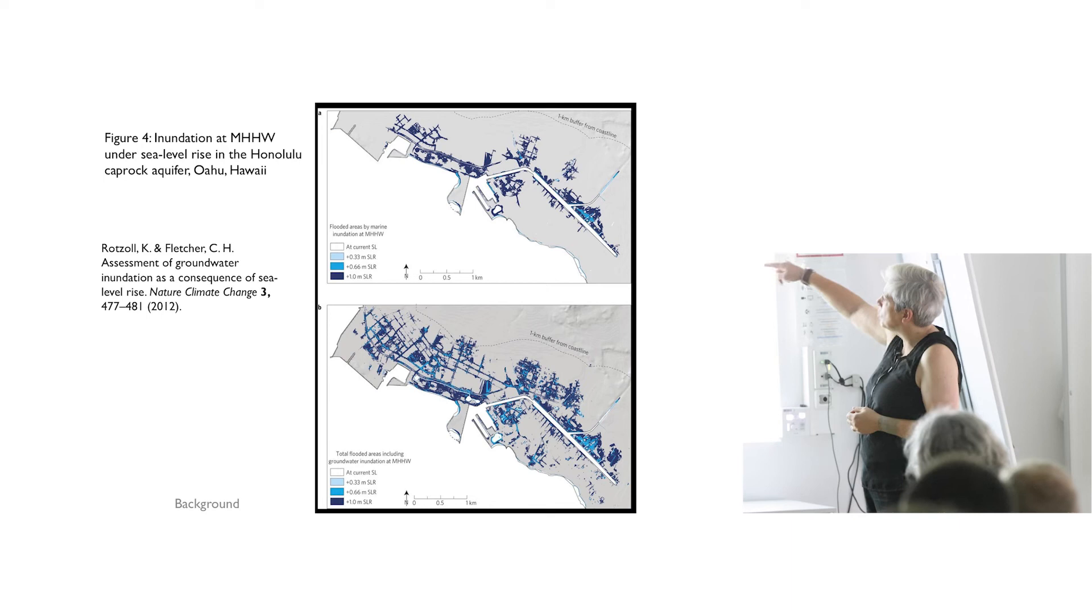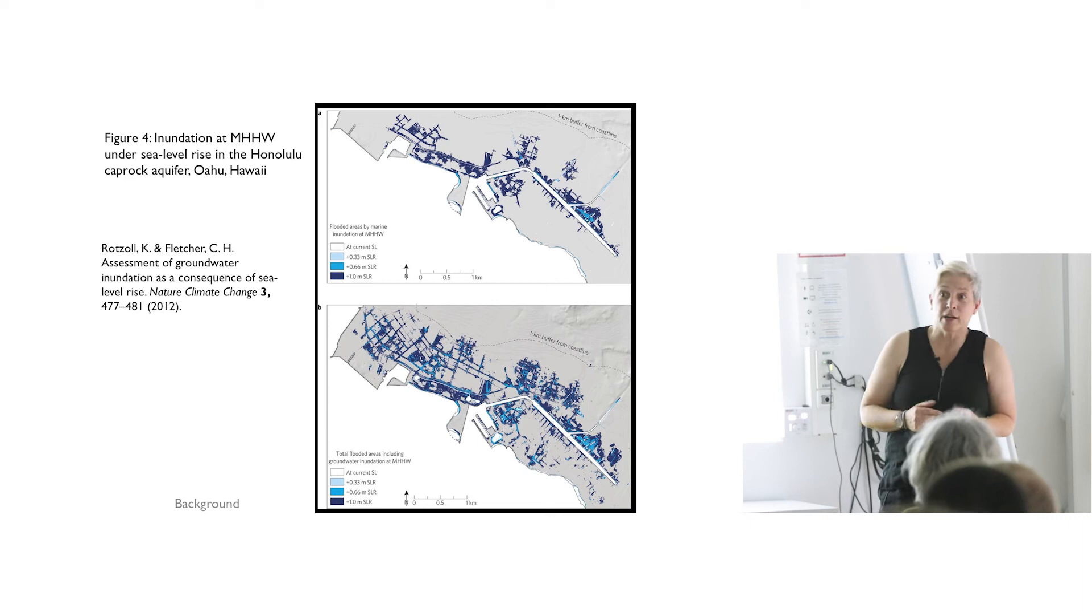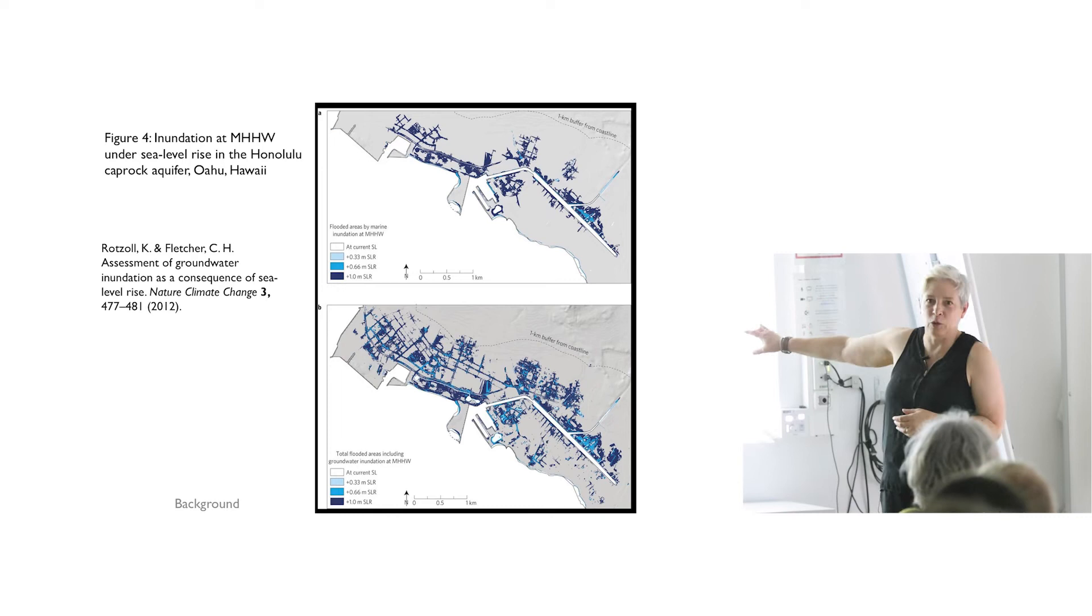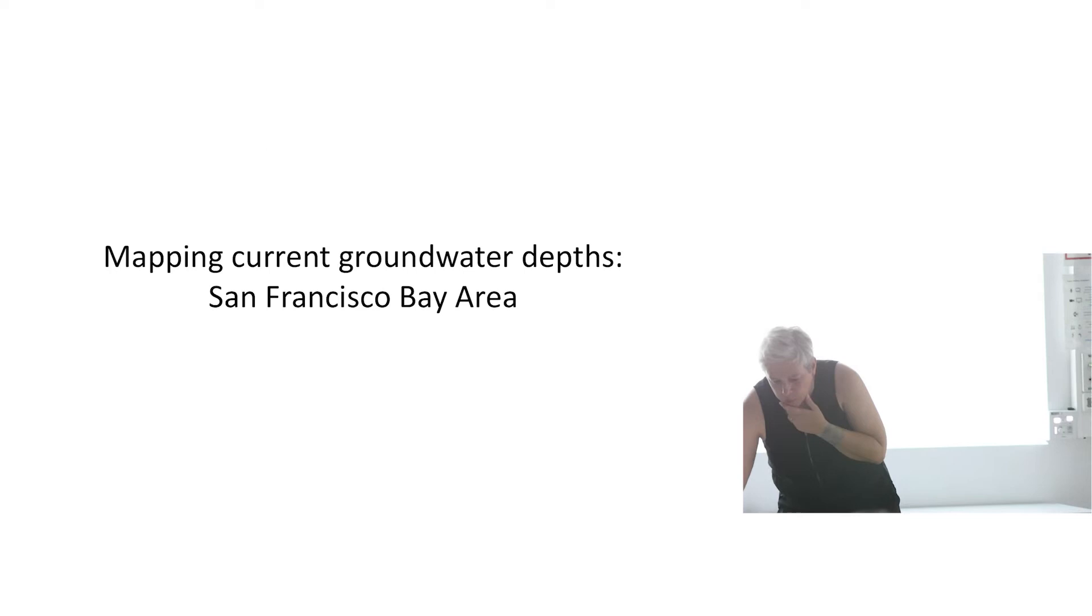This is a map of Honolulu and Hawaii. The top map shows how much flooding they expect in Honolulu from one meter of sea level rise. And the bottom map shows how much area they expect to flood if they also consider rising groundwater. That's not an optional thing. Nature is going to consider rising groundwater so that the bottom image is more likely to be what happens. And the top one is what people have been planning for.